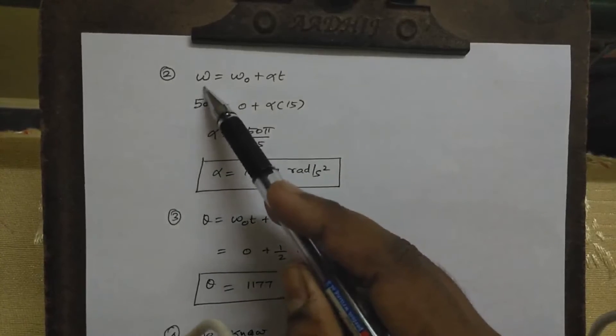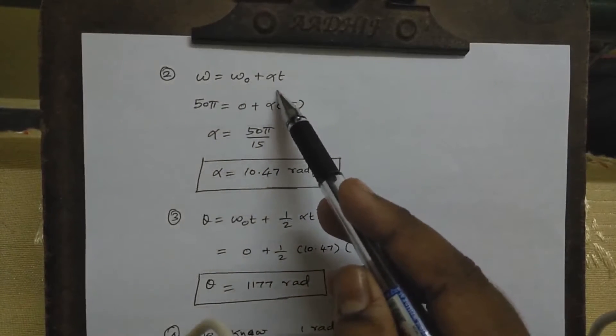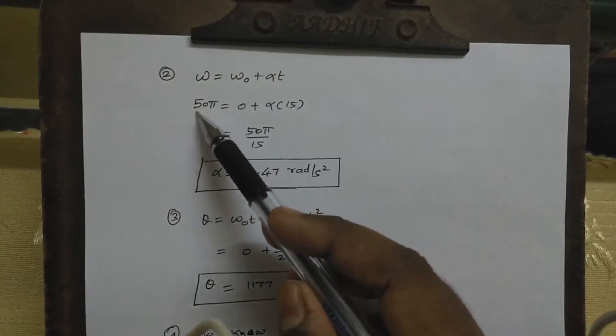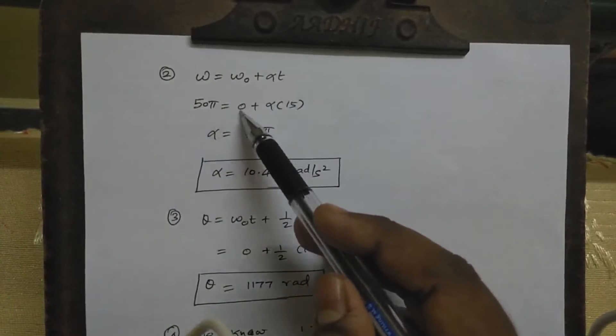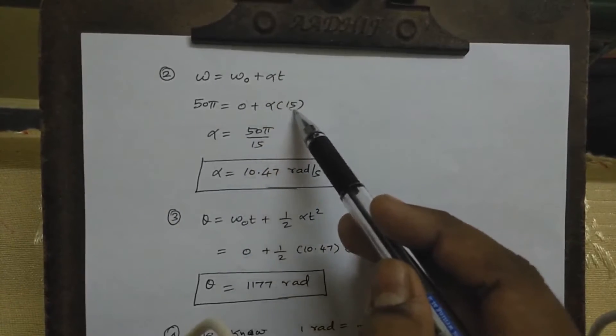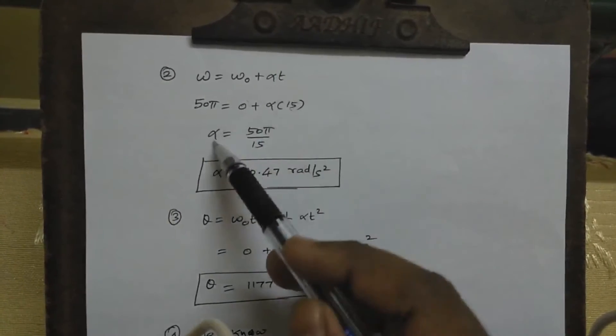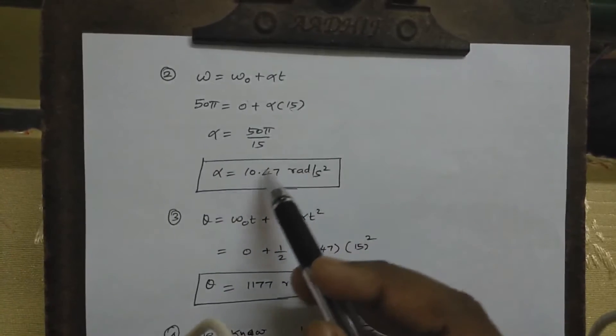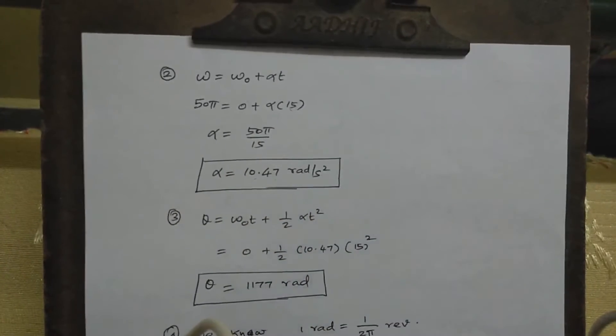Regarding the second step, ω equals ω_0 plus α times t. The value of ω is 50, initial velocity is 0, so it equals α times t. Time t is 15 seconds. α equals 50 by 15 equals 10.47 radians per second squared.